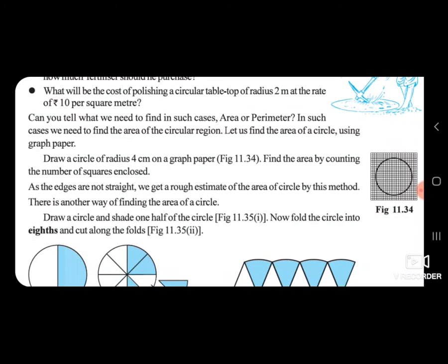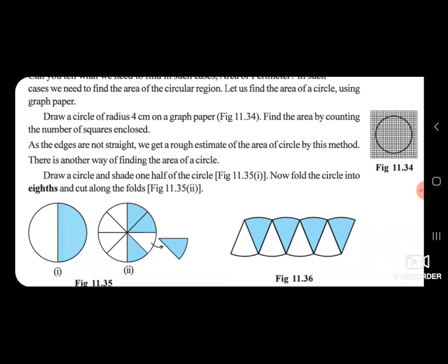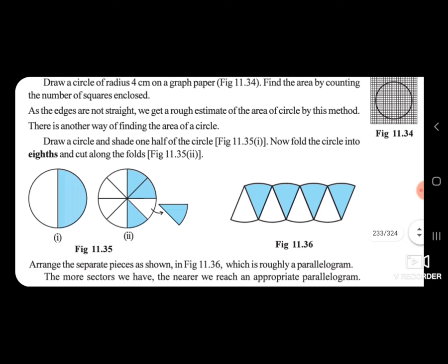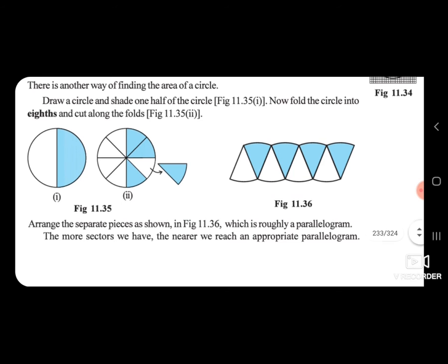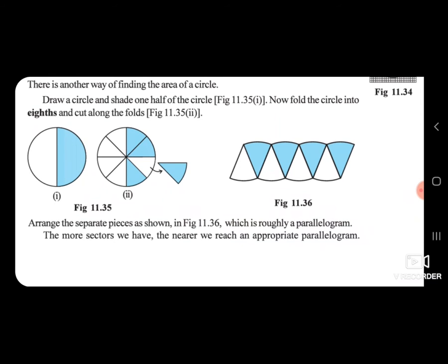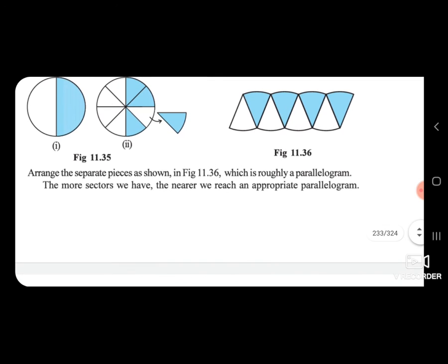There is another way of finding the area of a circle. Draw a circle and shade one half of the circle. Now fold the circle into 8 parts and cut along the folds. Arrange the separate pieces as shown in figure 11.36. Separate all the parts — which form roughly a parallelogram. The more sectors we have, the nearer we reach an appropriate parallelogram.